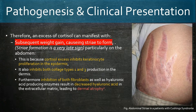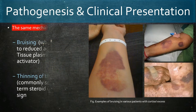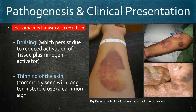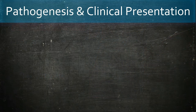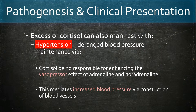This same mechanism is the cause of bruising and thinning of skin, which is seen commonly in patients on long-term steroid use. Additionally, another reason for the considerable overlap between Cushing's syndrome and metabolic syndrome is the presence of hypertension.